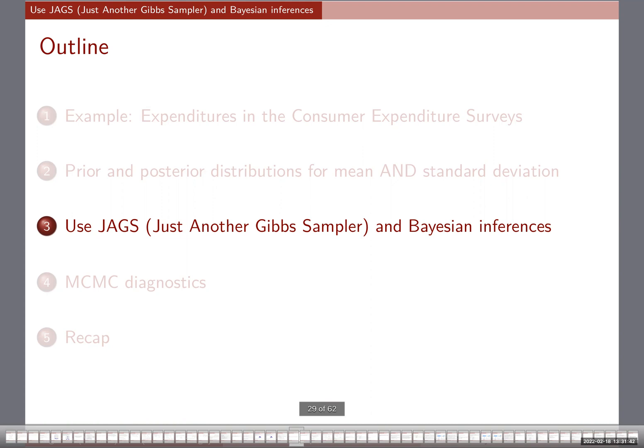We're going to start with introducing JAGS — it's short for Just Another Gibbs Sampler. It's a software that people wrote that allows you to do MCMC estimation much more efficiently and easily. As you remember from the previous part, for prior and posterior distributions of mean and standard deviation, we actually need to derive what the full conditional posterior distributions are, and you have to code it using a loop. Using JAGS can simplify the whole process.